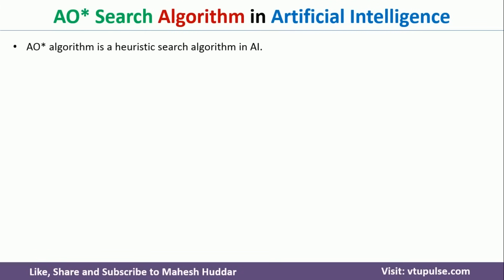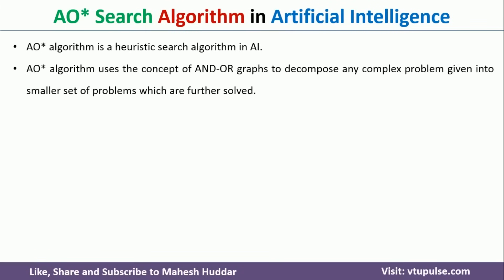The AO* algorithm is one of the heuristic search algorithms in artificial intelligence. In the AO* algorithm, we divide the complex problem into a smaller set of problems with the help of AND-OR graphs. Those smaller set of problems are further solved so that we can solve the original complex problem.